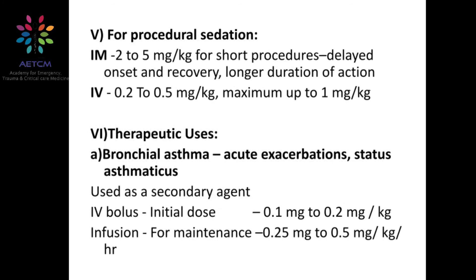For procedural sedation, the drug is given either IM or IV. When the IV line is not accessible, the patient is given IM first; once drowsy, IV access may be obtained. By IM route the recommended dosage is 2–5 mg/kg, useful for short procedures, with the main disadvantage being delayed onset, delayed recovery, and longer duration of action. By intravenous route the dosage is 0.2 to 0.5 mg/kg, up to a maximum of 1 mg/kg body weight.